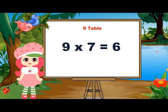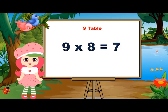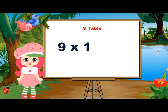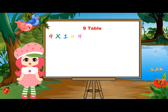9 sevens are 63. 9 sevens are 63. 9 sevens are 63. 9 eights are 72. 9 nines are 81. 9 nines are 81. 9 tens are 90. 9 tens are 90. 9 tens are 90. 9 ones are 9. 9 ones are 9.